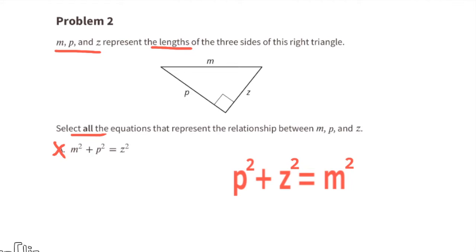Equation A won't work because that's not equivalent to p squared plus z squared equals m squared. Equation B works because m squared equals p squared plus z squared is equivalent to p squared plus z squared equals m squared. Equation C also works because it's also equivalent.